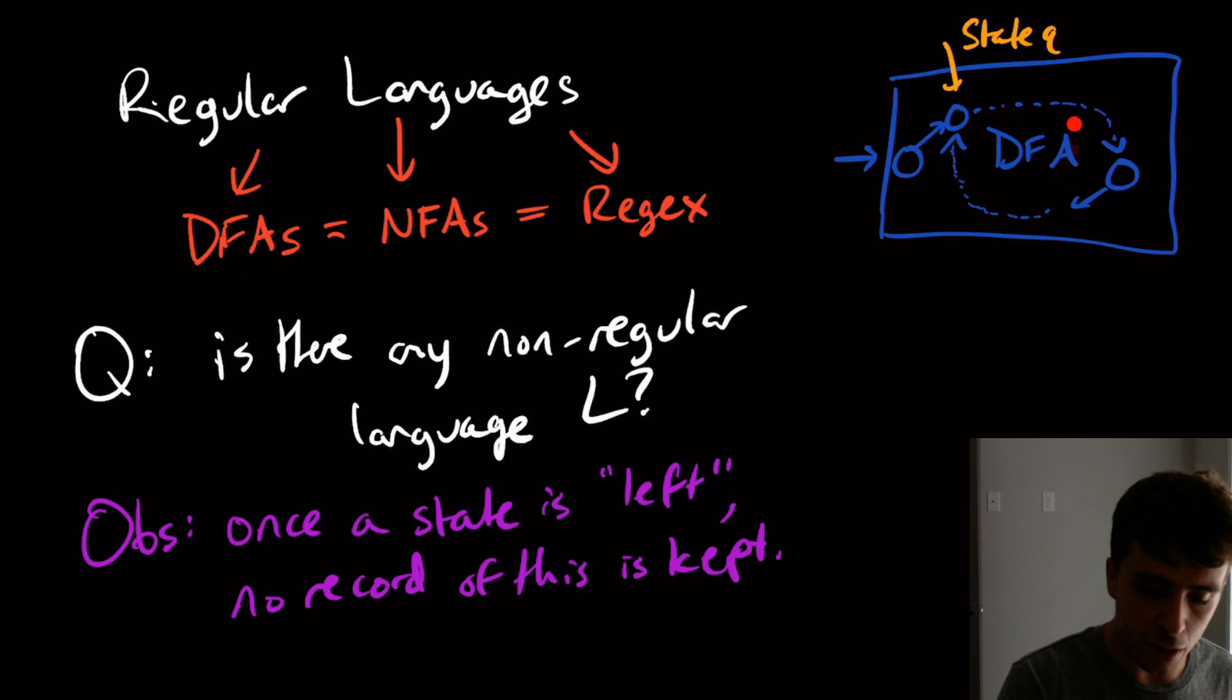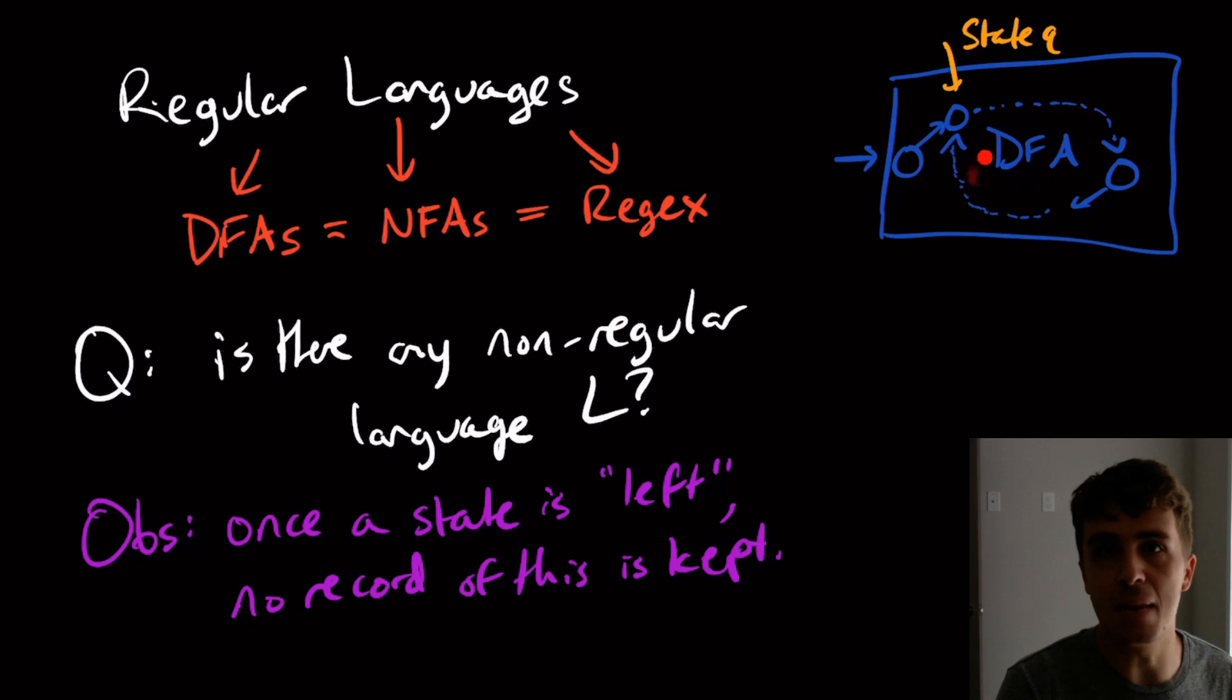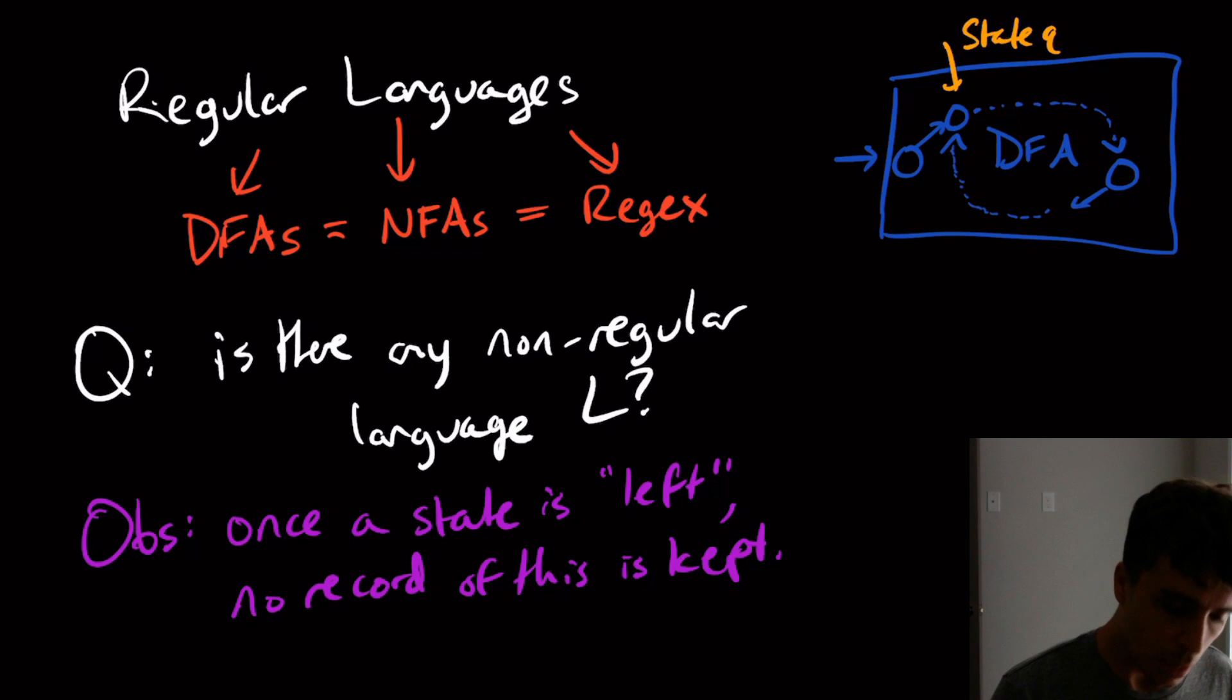So there's nothing really kept behind, so to speak, from the DFA reading an input string. And in fact, the NFA is the same idea, and the regex is also the same idea. Although you have to change it a little bit for regex, but the idea is the same. That once you have gotten past a certain point, there's nothing to remember what you've done previously. And what does that really tell us here?